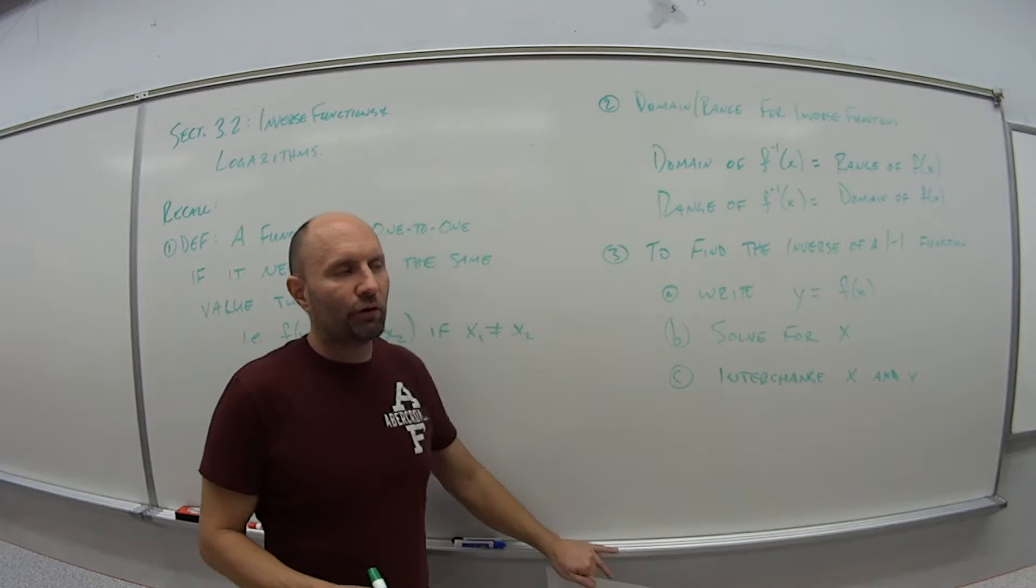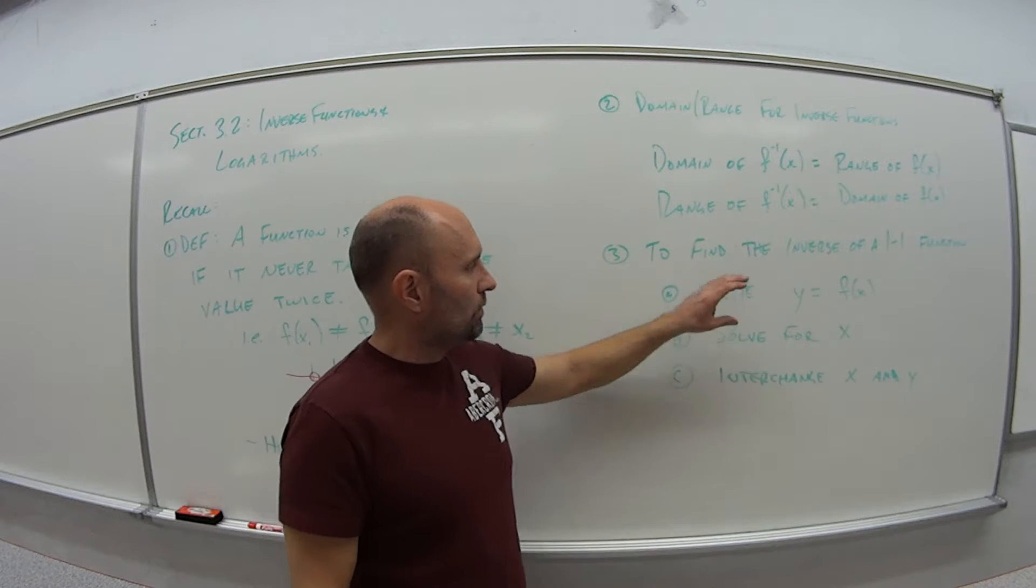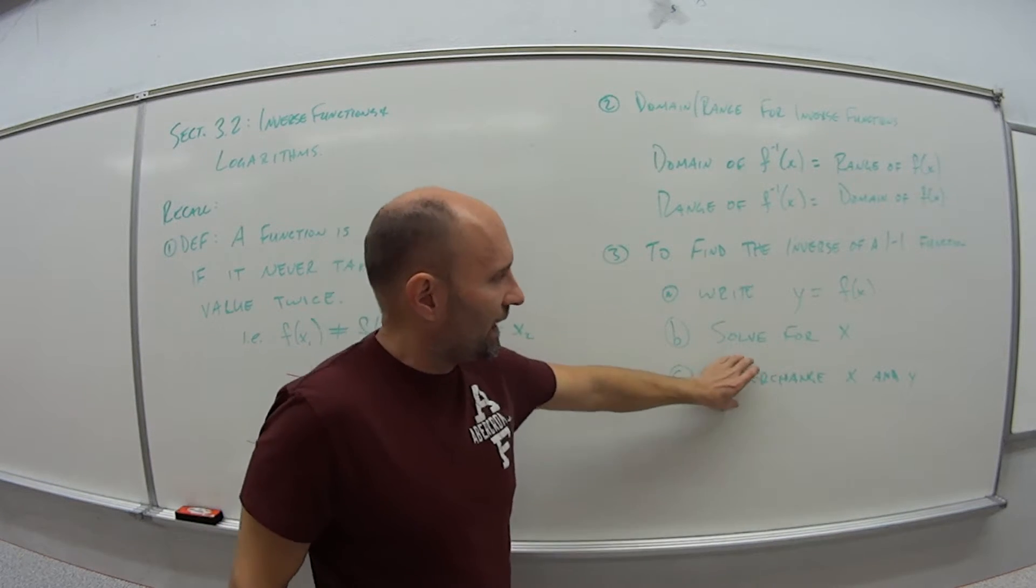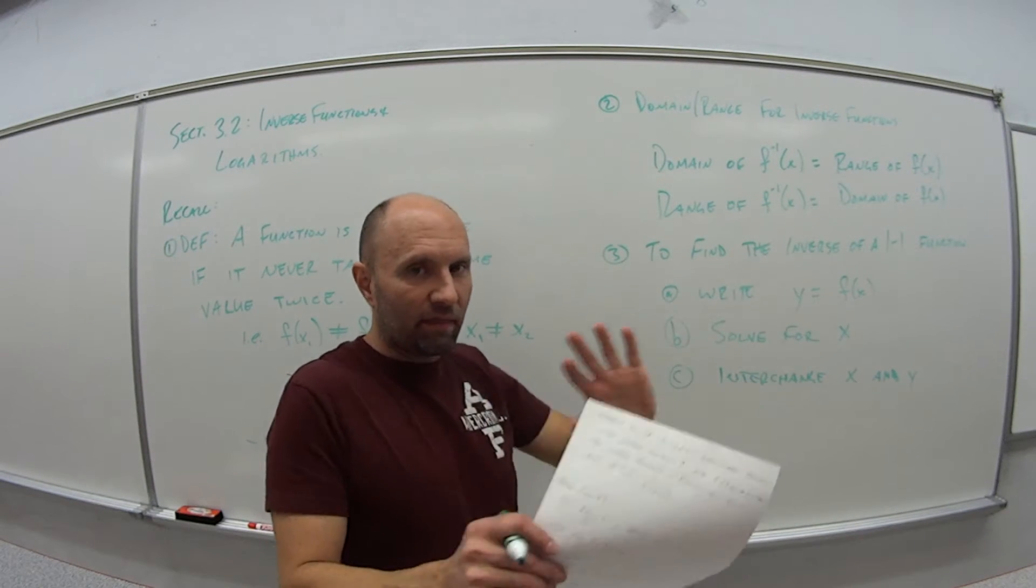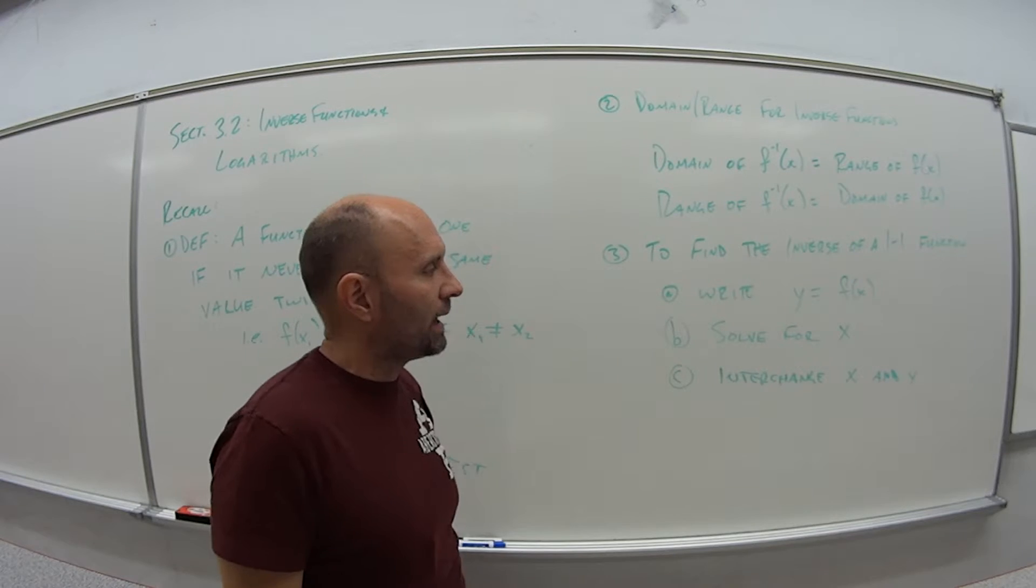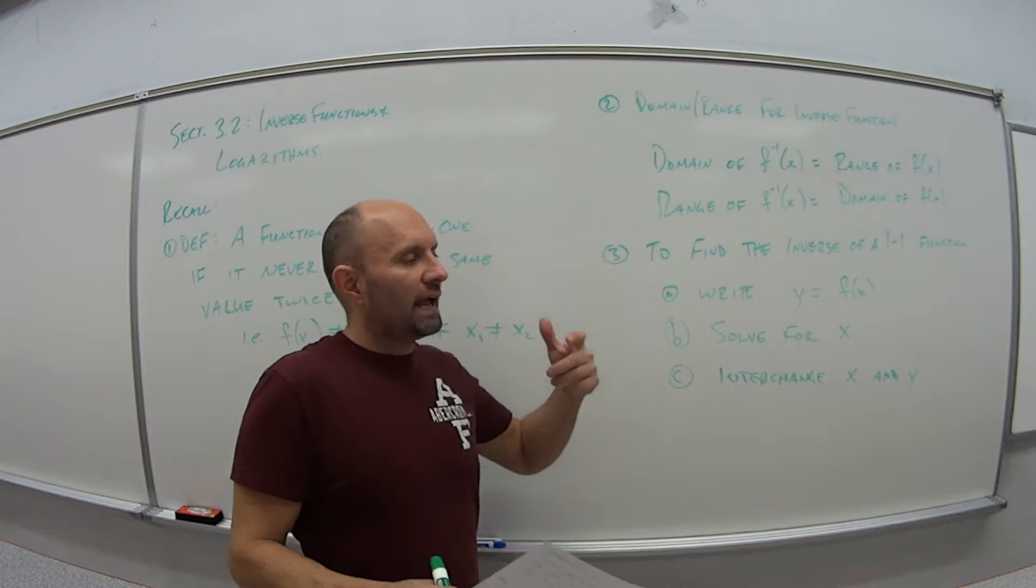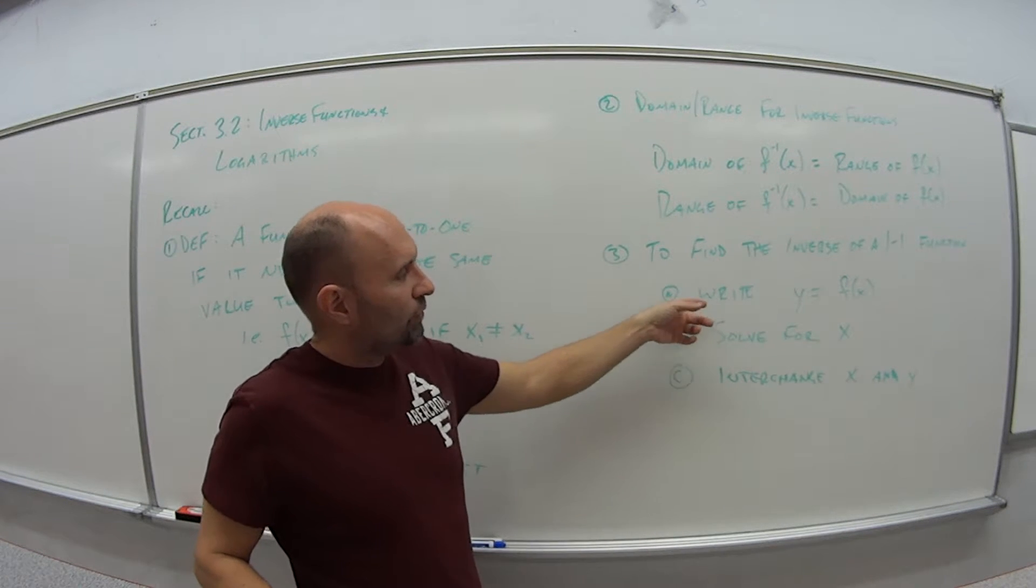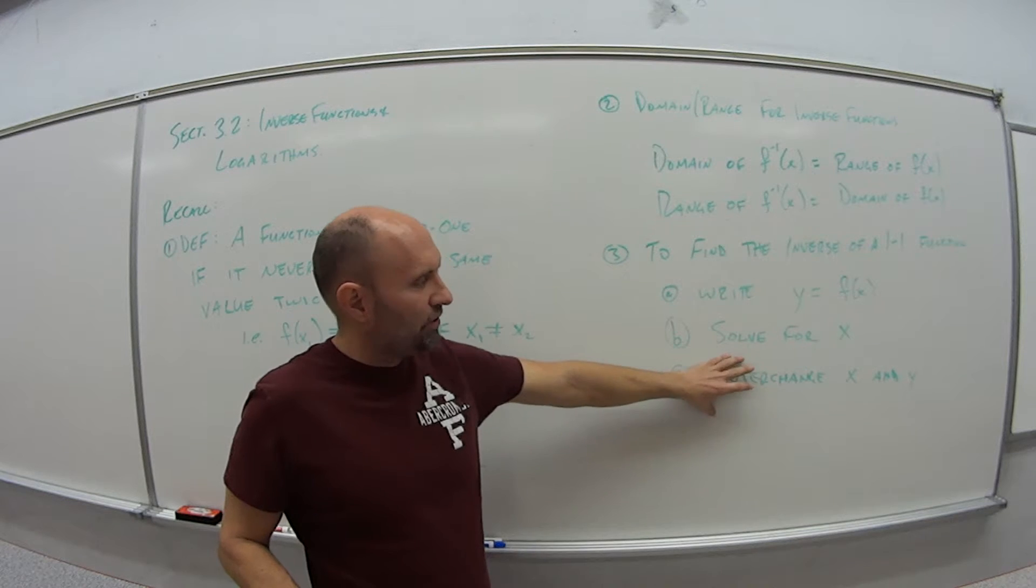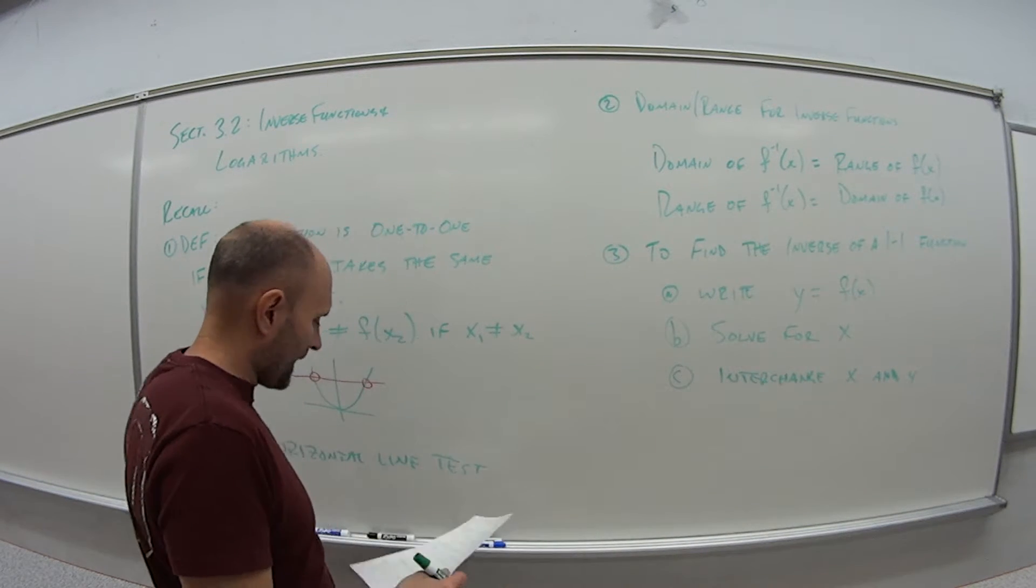You may have learned this in a little different order. Some people write the equation, then they change the x and y's, then they solve for y. That's fine, you'll still get the same answer. With math, there's not always one and only hard, fast way to do things. This is one of those situations.